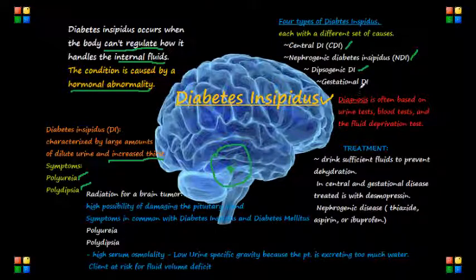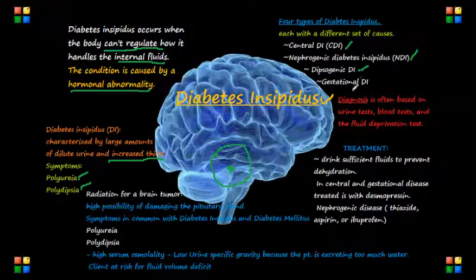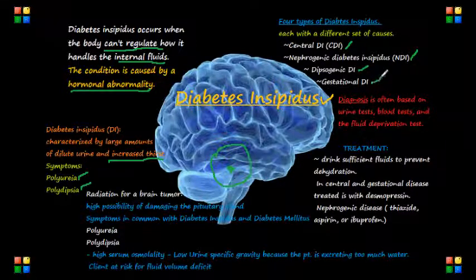Dipsogenic DI is another hypothalamus abnormality. Lastly, gestational diabetes insipidus occurs only during pregnancy.